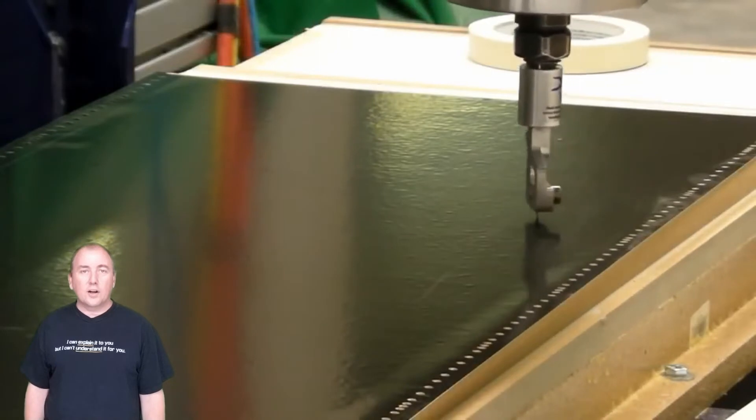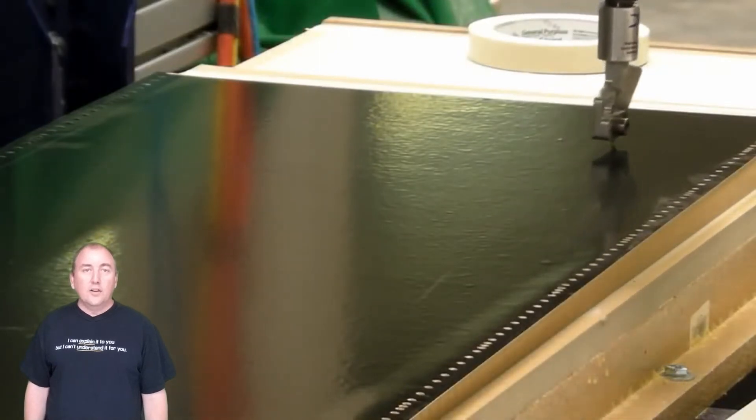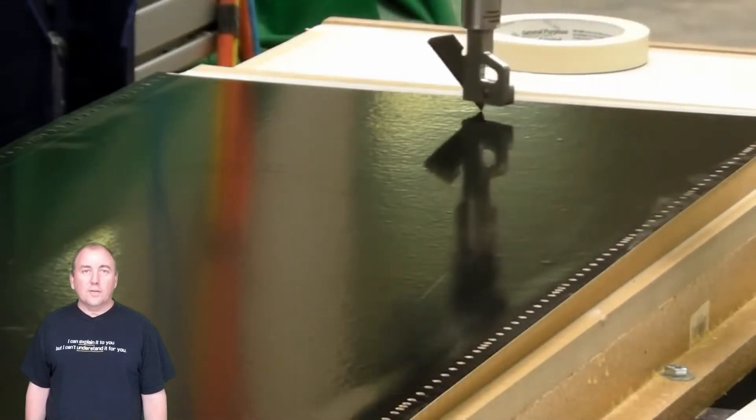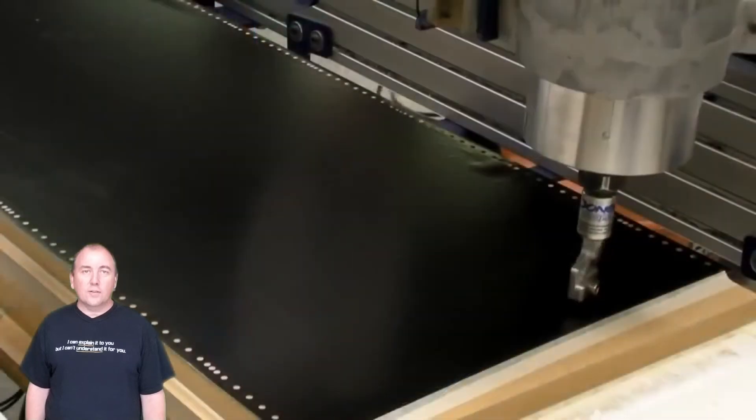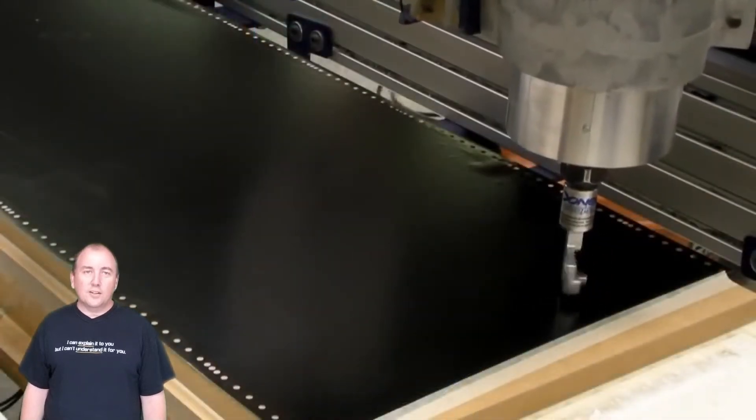The drag knife does a very good job of cutting the corrugated plastic and using the CNC to guide the knife makes for a very accurate cut especially on curves of the letters. Much better than what I could achieve cutting by hand.